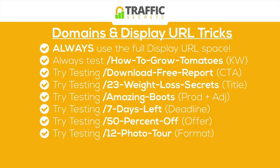Try testing what I call a format. If you're promoting a product or it could be a call to action, you can describe it — this is all about setting expectations on what's going to happen after the click. The format describes what they're going to see. So if the ad says 'amazing formal dress,' the URL could be '12-photo-tour,' '3D-video-tour,' or '5-video-tutorial' — something describing what the experience is going to be like related to the product, like 'detailed illustration' or 'architect blueprint.'